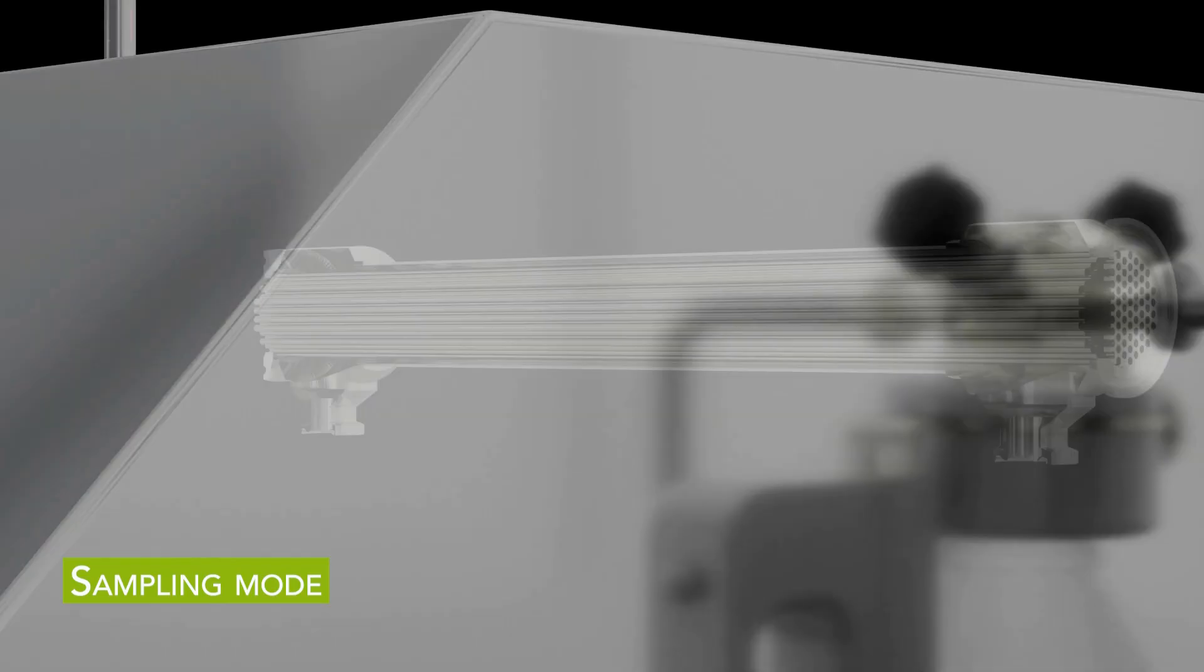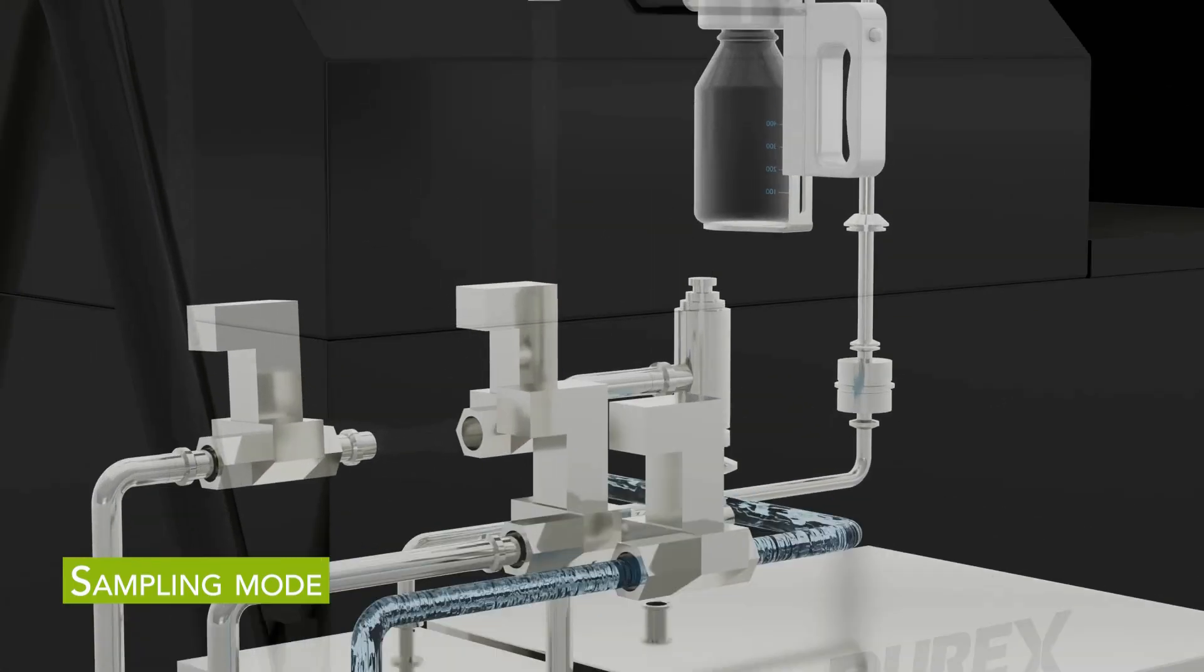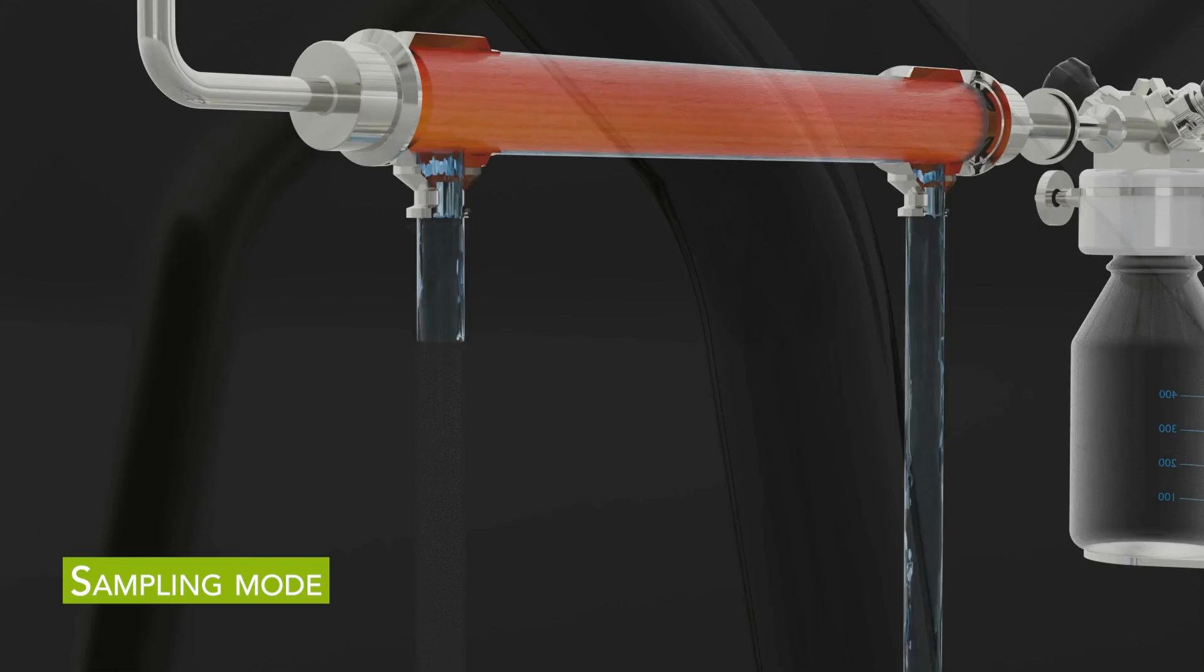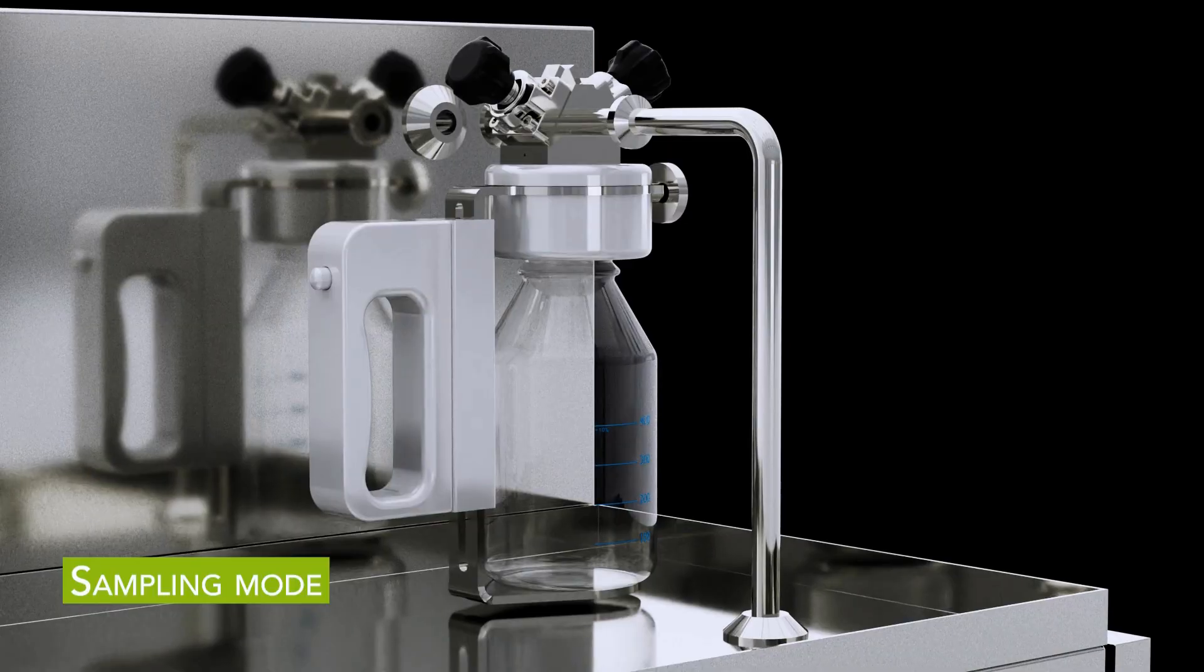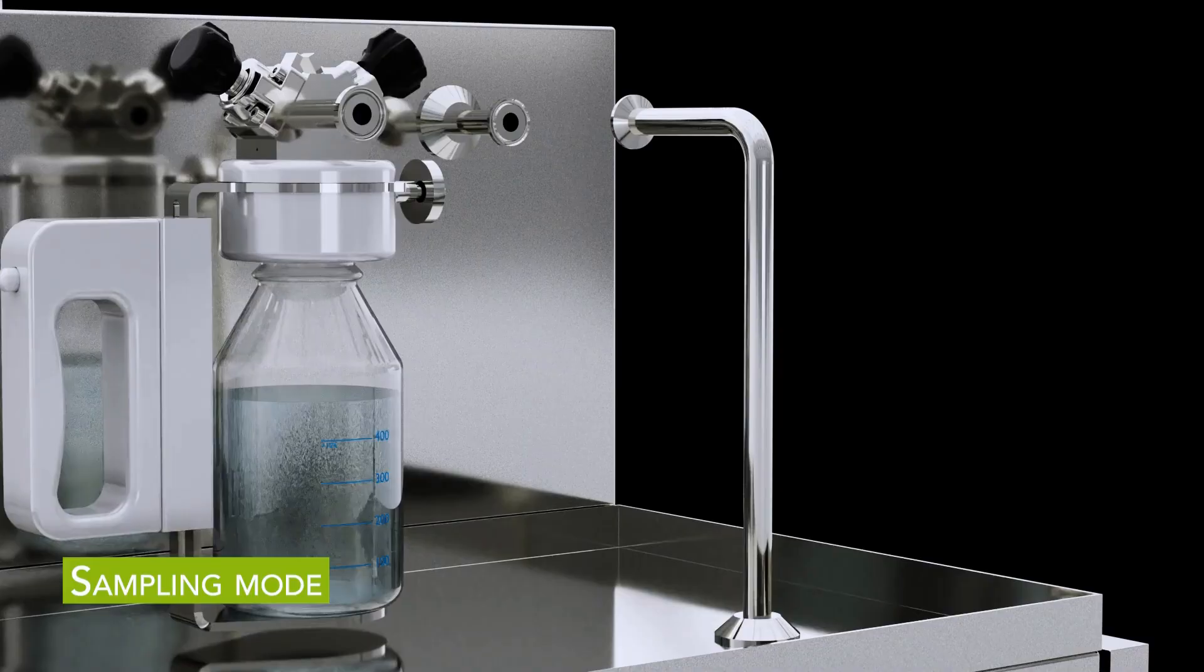During sampling mode, cooling water is automatically circulated through the heat exchanger shell, allowing steam condensate to be safely and efficiently collected in the sampling bottle.